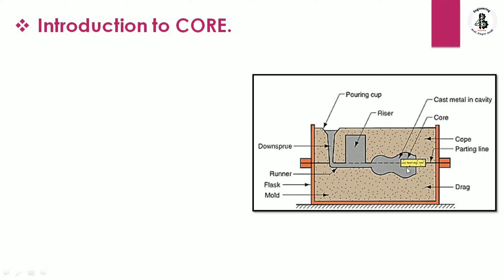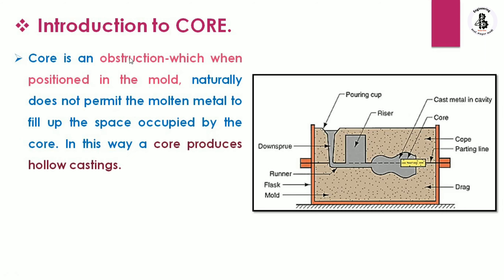As per the requirements of hollow castings, a core is to be placed. You can see this core is in a horizontal position, known as a horizontal core, placed into the cavity in between the cope and drag, or around the parting line. Basically, a core is used for making a hollow casting. A core is an obstruction which, when positioned into the mold, does not permit the molten metal to fill up the space occupied by the core, and in this way produces a hollow casting.